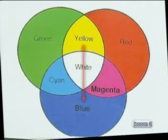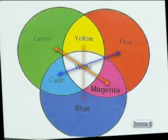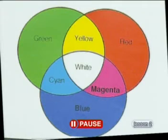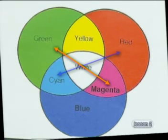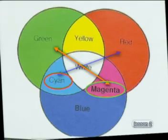Complementary colors are always opposite each other on the color chart and together contain all three primary colors. There are two more sets of complementary colors. From the color chart, cyan and red are complementary, and so are magenta and green. Notice that in each pair of complementary colors, one is a primary and the other a secondary color of light.